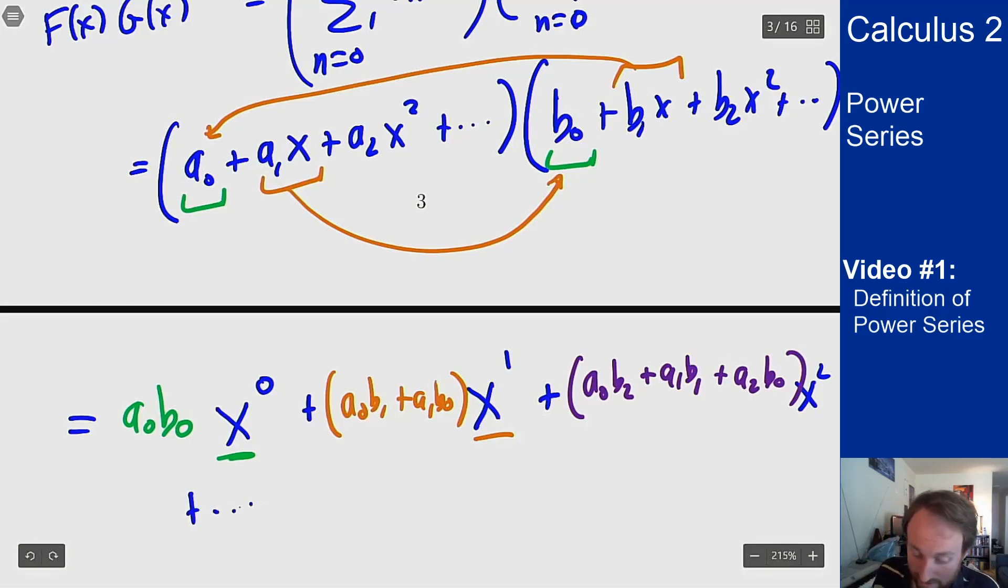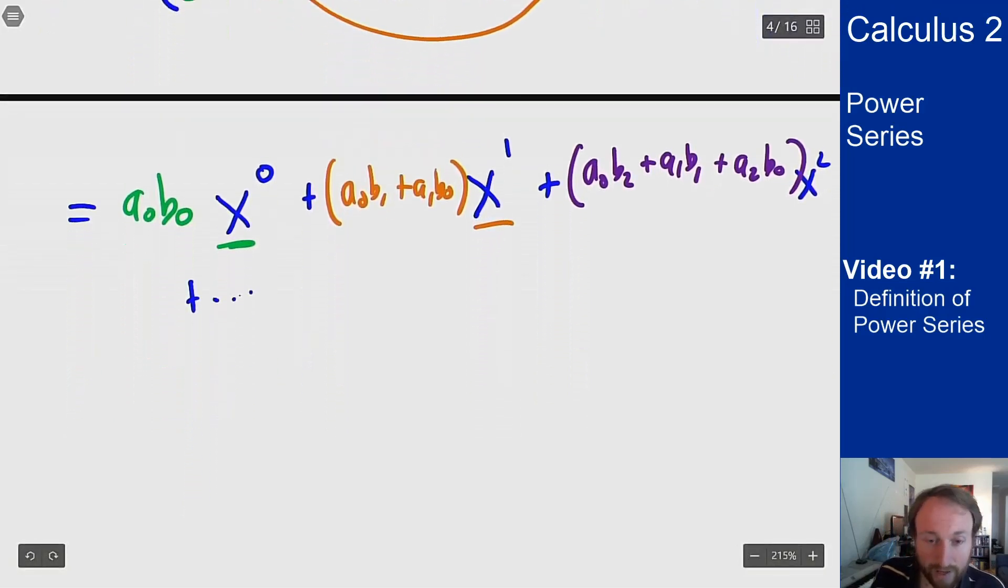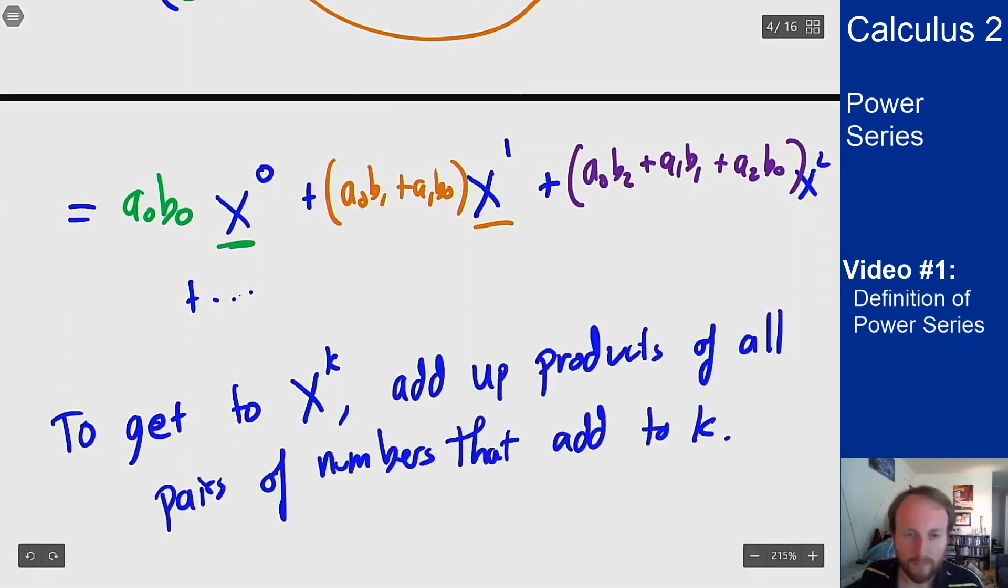The pattern you might see here is that to get to x to the k I need to add up products of all pairs of numbers that add to k. How do I get x to the zero? Well the only way I can add two non-negative numbers together to get zero is by adding zero plus zero. So I do that and I get my zero coefficient. How do I get two? Well there's three ways I can add two non-negative numbers together to get two. I either do zero plus two, I do one plus one, or I do two plus zero. And that gives you my three coefficients that I have there.